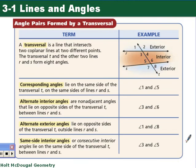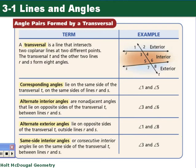Third, alternate exterior angles — they're on opposite sides of the transversal, but exterior, meaning outside the two lines. An example of alternate exterior angles would be angle 2 and angle 7. Our last angle type is same side interior — on the same side of the transversal and interior to the two lines. Angle 3 and angle 5 are an example of same side interior angles.